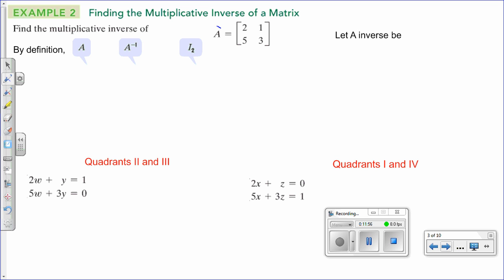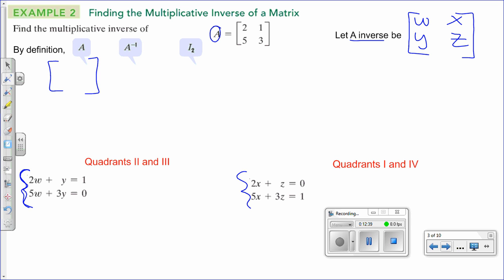We have a matrix A and we're going to let the inverse of matrix A equal W, X, Y, and Z. We're going to create two systems of equations and solve for W, X, Y, and Z with numbers. Matrix A is 2, 1, 5, and 3. The inverse is W, X, Y, and Z. By definition, if we multiply a matrix times its inverse, we get identity: 1, 0, 0, 1.